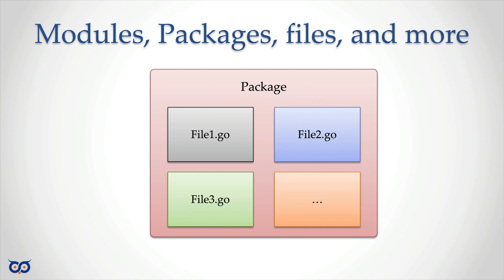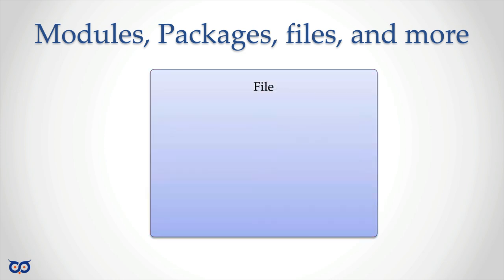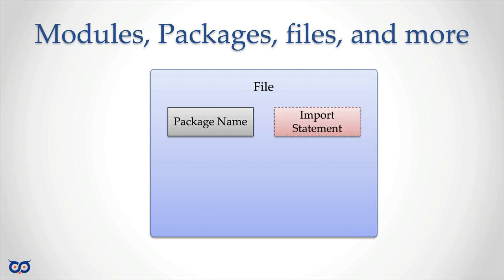When we talk about what's inside a Go file, the only thing required is the package name — that's it. That's what says this file belongs to a certain package. Everything else — import statements, constants, variables, types, functions — is optional. I've used dotted lines to indicate those are optional. Package name is the first required thing, besides comments.